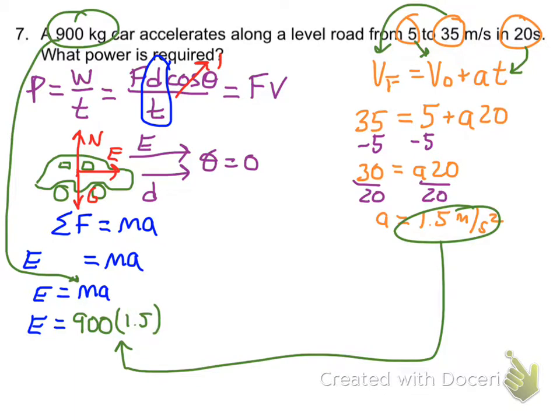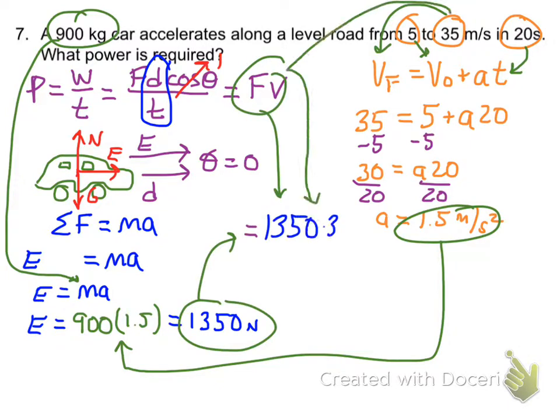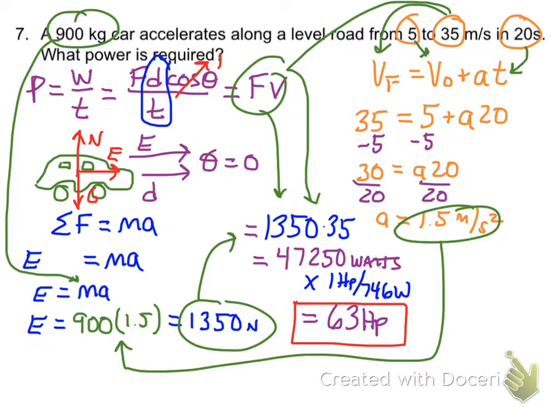Then that goes back in my f equals ma, and I find that the engine force is 1350 newtons. That goes in with my power equals fv. With the velocity, I choose 35 because I need to make it all the way through this acceleration. I need to have enough power at the end to continue to get to that 35.